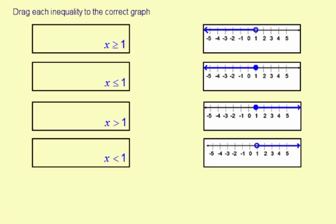And notice that the arrow here goes to the left, and that means the values less than 1 are the answers. So that means x is less than 1, matches with this one down here.